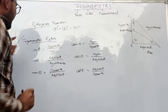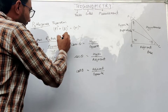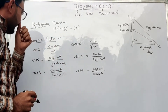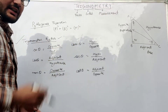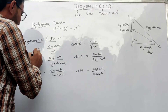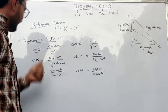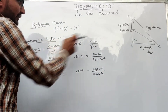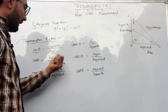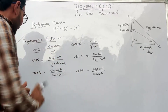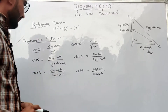Now here comes another term: trigonometric ratios. Trigonometric ratios, as we can assume from the name, are the ratios of the sides or angles of a right angle triangle. The first trigonometric ratio is sin theta, where sin theta equals the opposite side upon hypotenuse. Cos theta equals the adjacent side upon hypotenuse, and tan theta equals the opposite side upon the adjacent side.